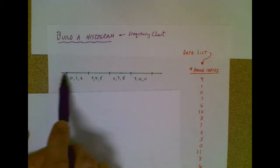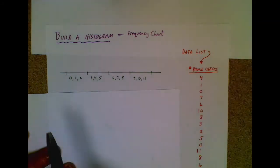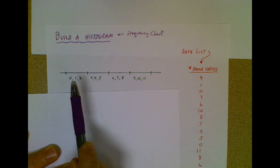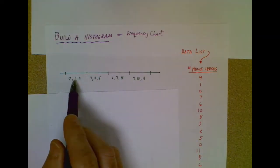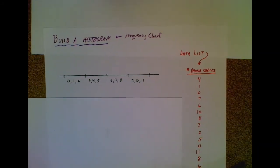So I've made a line or an axis, and in the axis I've created different categories. This first category is zero, one, and two, standing for the number of people who check their phone zero, one, or two times during this one hour stretch.